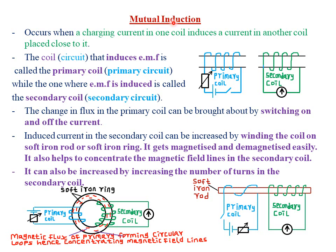Today we're looking at mutual induction, whereby mutual induction occurs when a changing current in one coil induces a current in another coil which is placed closer to it. For example, you can see we have our two coils here, which are being placed closer to each other.